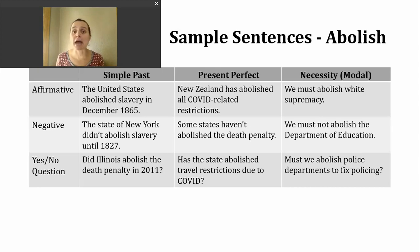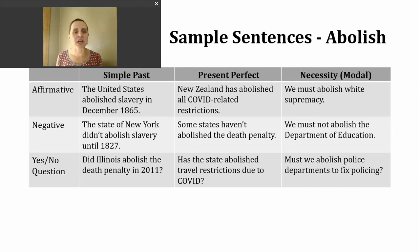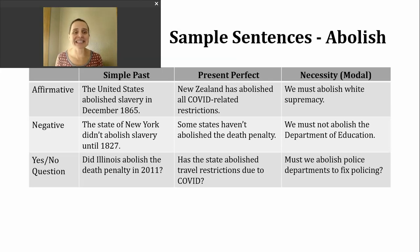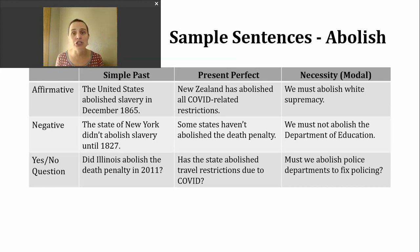Next, let's look at making a yes or no question in the present perfect. To do this, we'll start with 'have' or 'has,' then our subject, and then the participle form of the verb. Here's an example: Has the state abolished travel restrictions due to COVID? This question is asking about ending certain rules that may have limited the ability for people to travel or come in to a particular state.